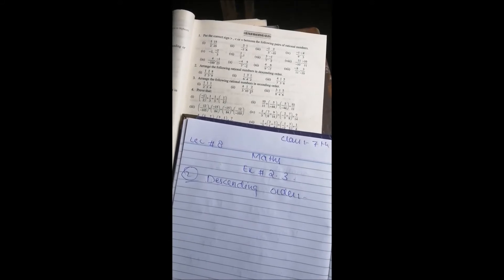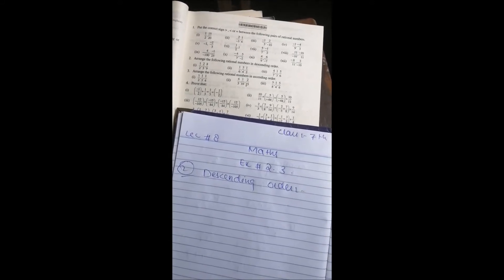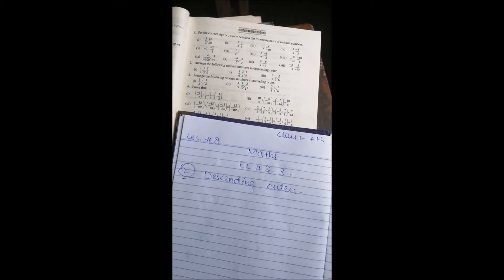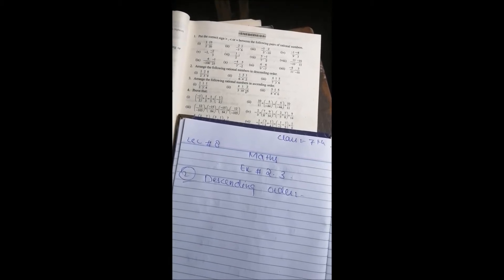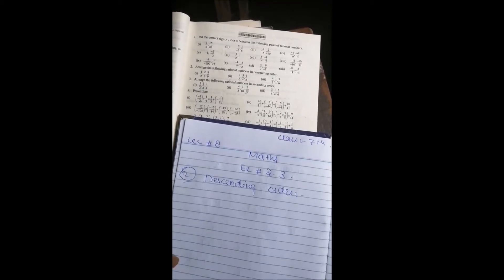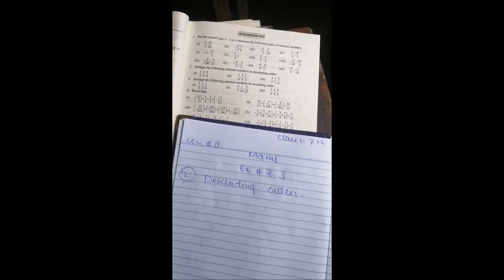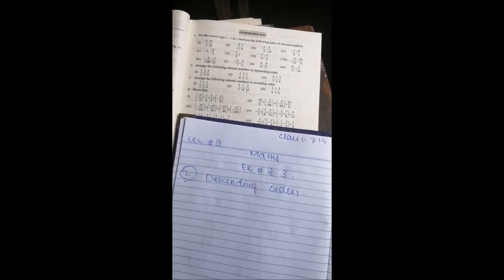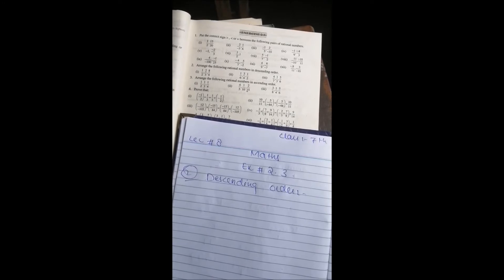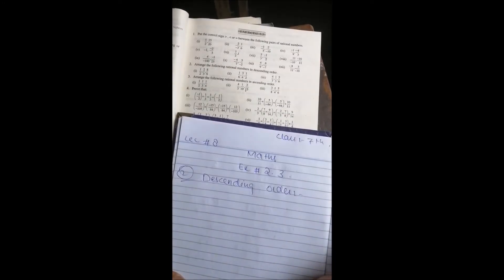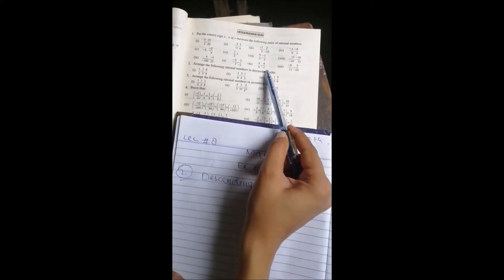In the previous lecture, we did question number 1. We saw which numbers are greater, less numbers, and equal numbers. In the minus, we learned that the number is small and large. We did the same with the denominators. This is what you did in question number 1.